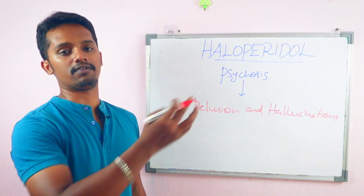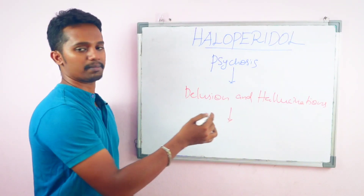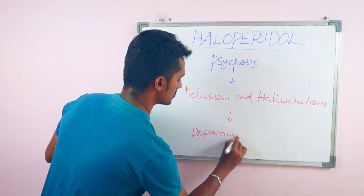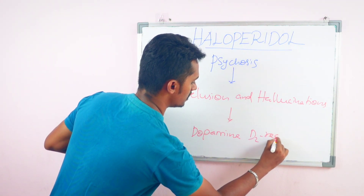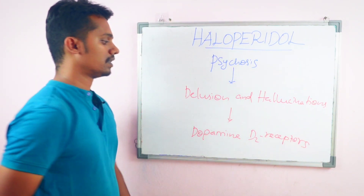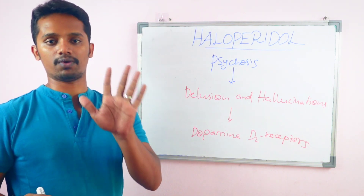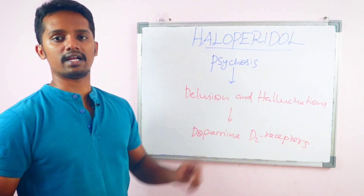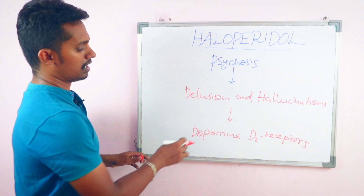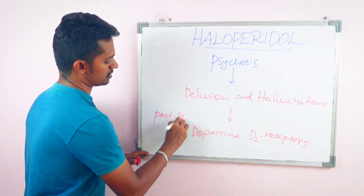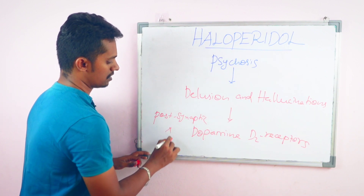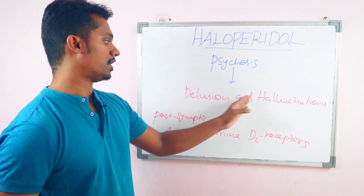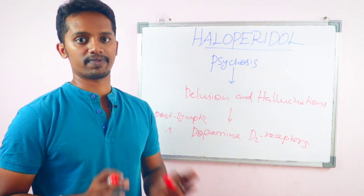There is a reason for the development of these two symptoms. It is dopamine receptors — in particular, dopamine D2 receptors. There are 5 types of dopamine receptors: D1 through D5. In particular, when the D2 receptor is overactivated, delusion and hallucination develop. Specifically, post-synaptic dopamine D2 receptor activation leads to delusion and hallucination, which develops into psychosis.